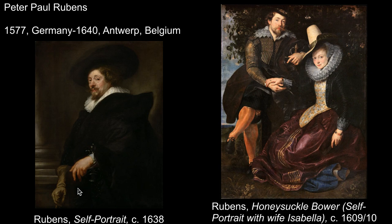Our poster child for Flemish Baroque is Peter Paul Rubens. His biography has significant influence on his goals as an artist and the type of art he makes. His father was a Calvinist and an advisor to William the Silent, the leader of the Dutch Revolt. His father had an affair with William's wife, and Rubens' dad was imprisoned and he was raised in poverty for much of his childhood. He was raised as a Protestant, a Calvinist, but the family converts to Catholicism when he's 10 years old.